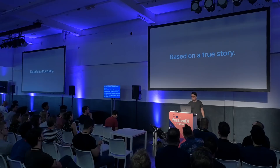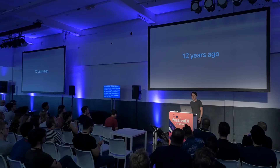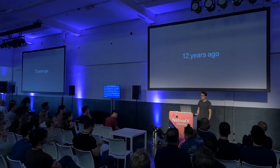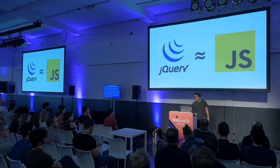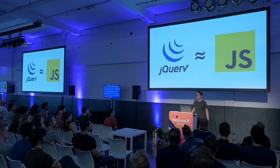Before getting into too much detail, I want to start with a true history. 12 years ago, JavaScript was not what it is today — it was a mess. Different browsers had different behavior: Internet Explorer, Netscape. JavaScript itself lacked the high-level APIs that today we consider basic, so it was really hard to write complex applications. Then something happened that came to solve all those problems: it normalized browser behavior and provided a higher set of APIs. Some of them are part of the web today, like querySelector.